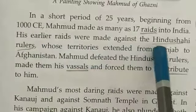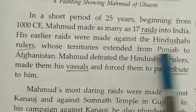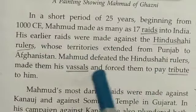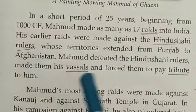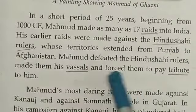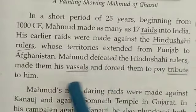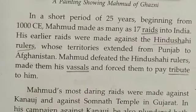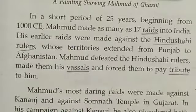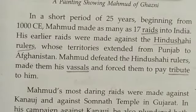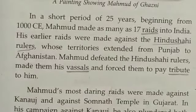His earlier raids were made against the Hindushahi rulers, whose territory extended from Punjab to Afghanistan. Mahmood defeated them, made them his vassals — meaning subordinates, like servants — and forced them to pay tribute to him. Tribute is a sign of respect, which can be in the form of gifts or praise.